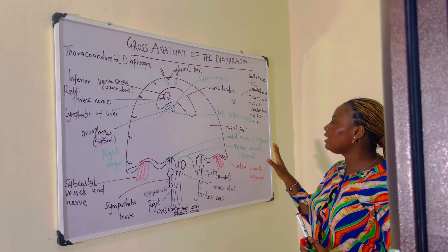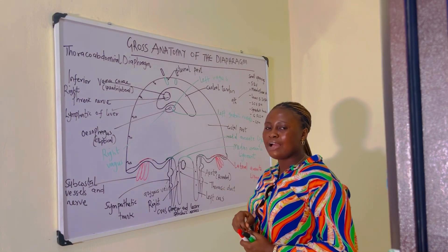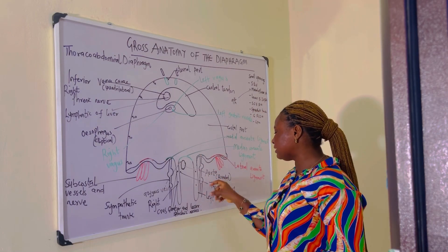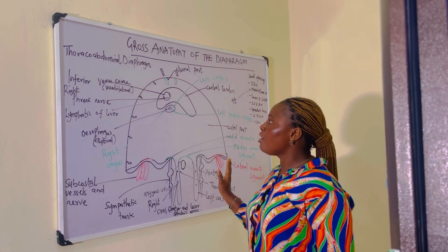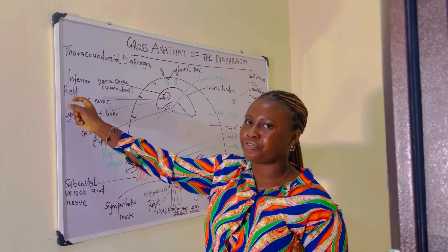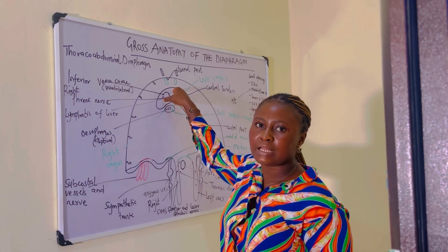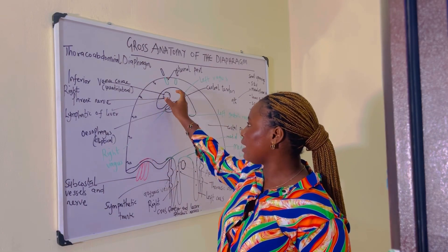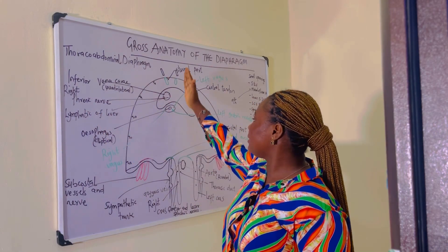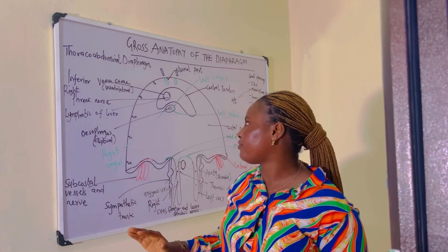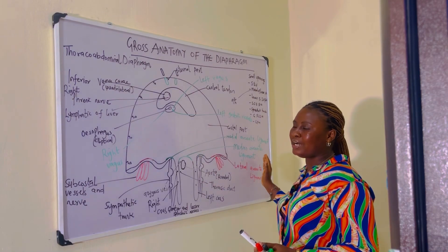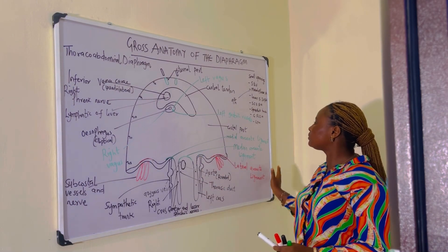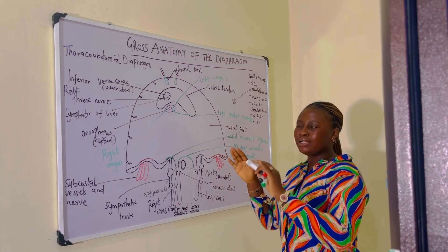The last small opening carries the left phrenic nerve, which is seen at the left cupola of the diaphragm, located at the left crus. Remember that the right phrenic nerve passes through the vena cava opening at the central tendon of the diaphragm. Those are the structures passing through the small openings of the diaphragm.